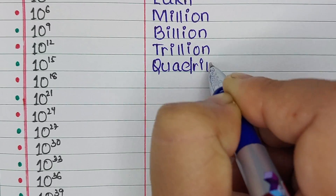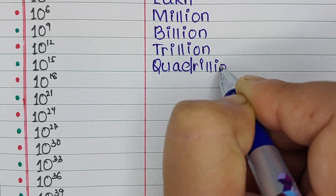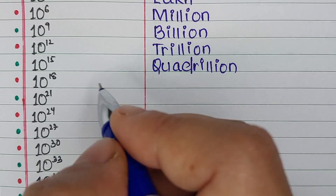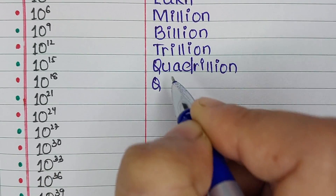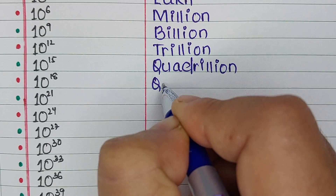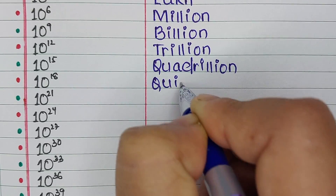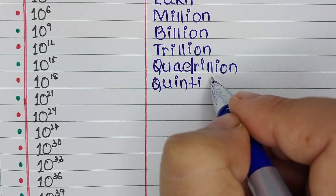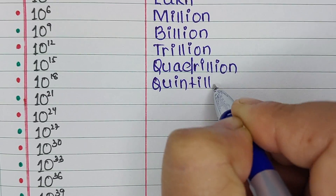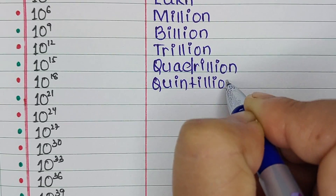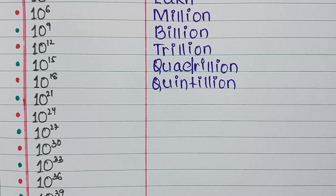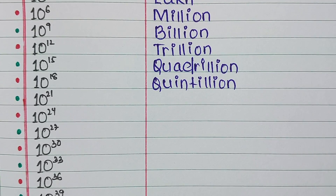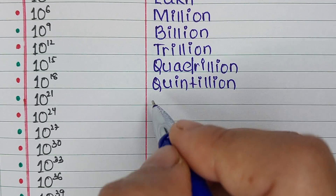Next is 10 to the power 15. It is Quadrillion. Next is 10 to the power 18. It is Quintillion.